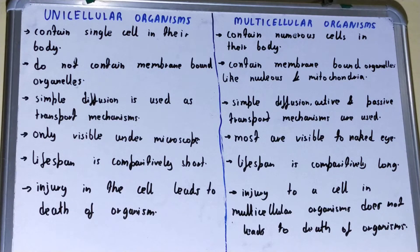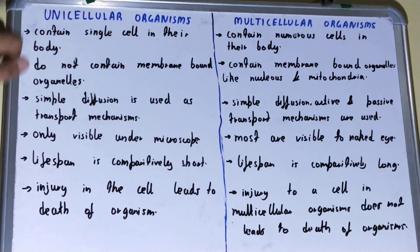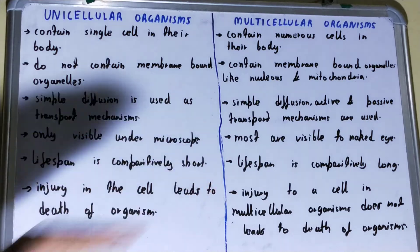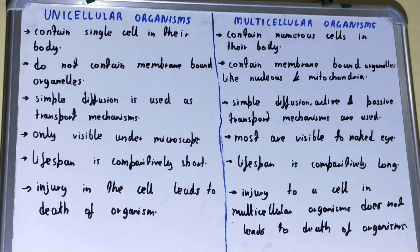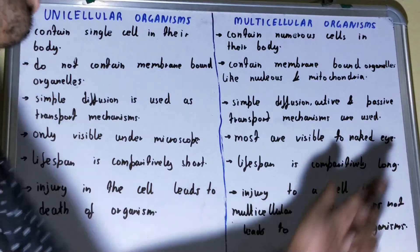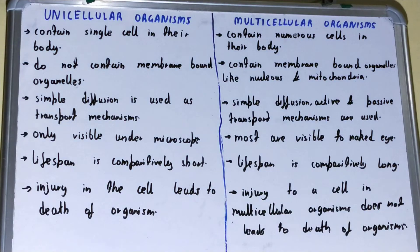Next, if we talk about lifespan, the lifespan of unicellular organisms is comparatively short. Whereas if we talk about the multicellular organisms, their lifespan is comparatively long.